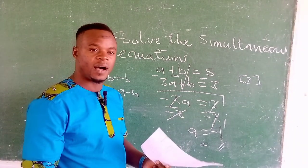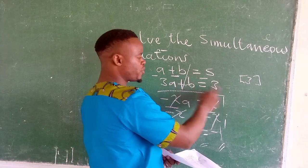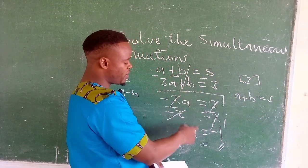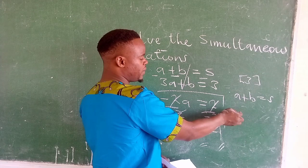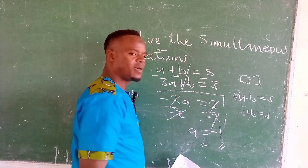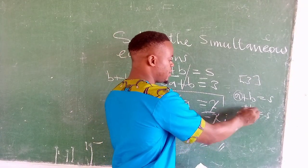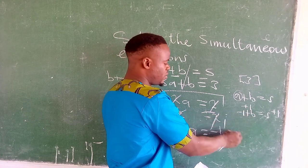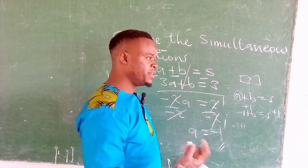The simultaneous equations have two unknowns. So how do you determine the value of b? You simply pick one of the equations. I am picking the first equation: a plus b is equal to 5. Since we have determined the value of a, I will substitute it in the equation — where there is a, I will write its value: negative 1 plus b equals 5. We add the additive inverse of negative 1, and these two will give us 0.